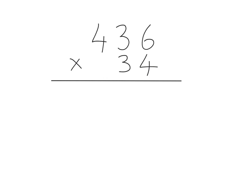So let's have a look at what we do. We've got a calculation here, 436 multiplied by 34. Now, for this calculation, we're going to start off with the four in the ones column here, and we're going to multiply that four by 436.